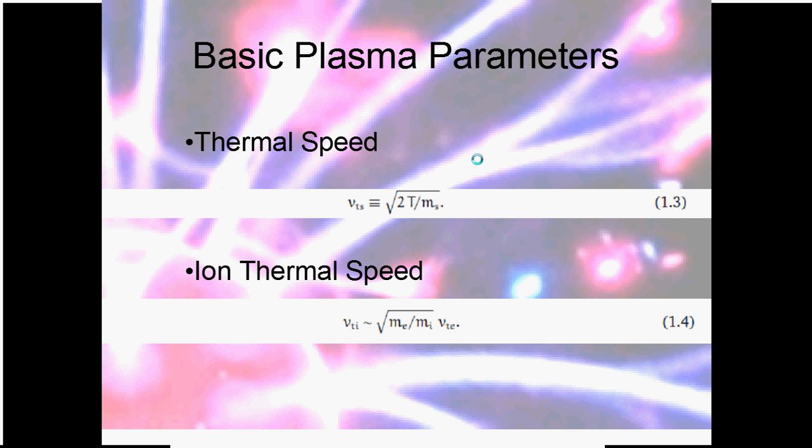If the electrons are traveling at say 100,000 meters per second, the ions are traveling on the orders of hundreds of meters per second, maybe 400 or 500 meters per second. So the ions tend to be much slower in the plasma than the electrons. That's a very important concept as we'll see later.